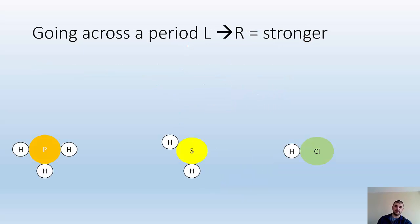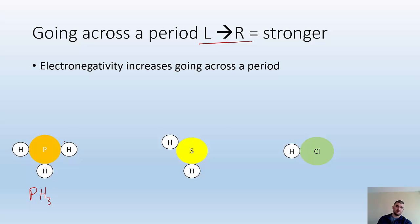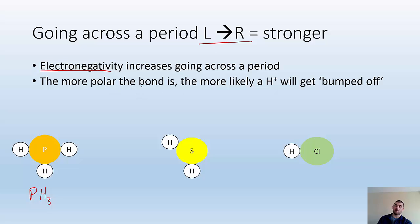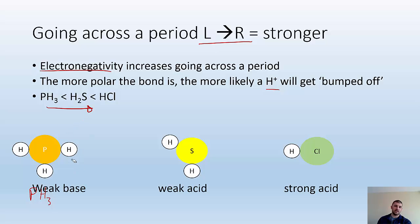As we go across the periodic table from left to right, we get stronger acids. For example, we have PH3, H2S, and HCl. The reason is that electronegativity increases going across, so we get more polar bonds. As we get more polar bonds, it's more likely H+ will get bumped off. So PH3 is going to be less acidic than H2S, which is going to be less acidic than HCl — that's just moving left to right on the periods. PH3 is actually a weak base, H2S is a weak acid, and HCl is a strong acid.